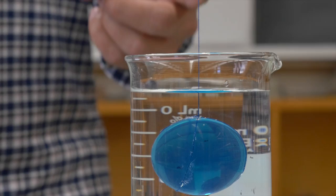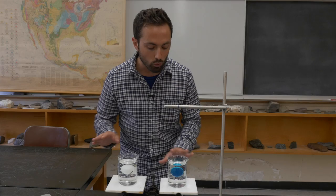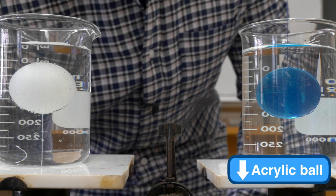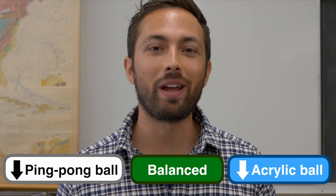Now I want you to make a prediction. If I were to release this balance and allow it to rotate freely, which way do you think it would tip? Towards the acrylic ball, towards the ping-pong ball, or would it remain perfectly balanced?